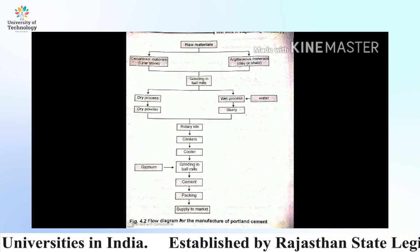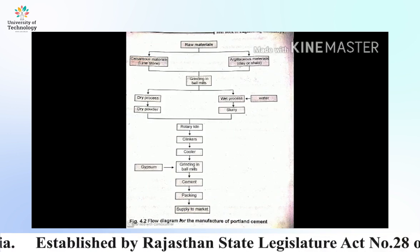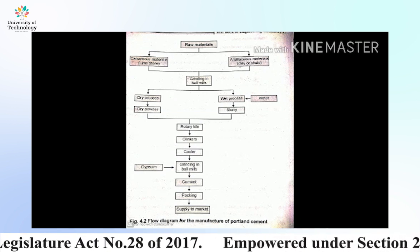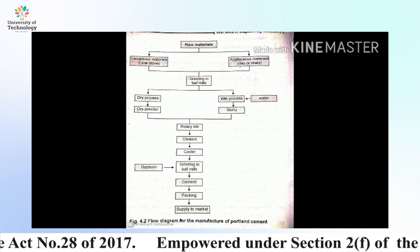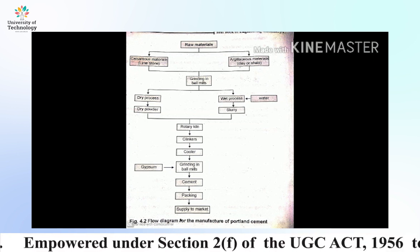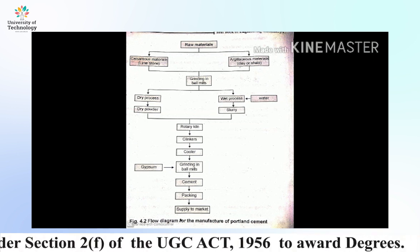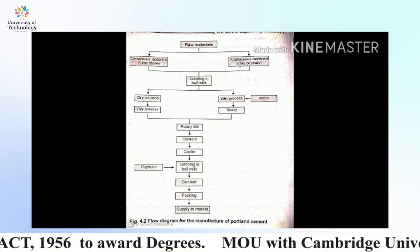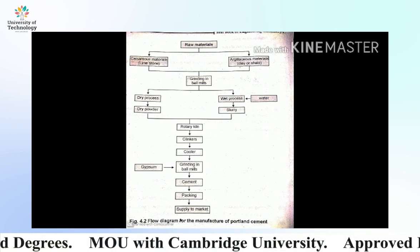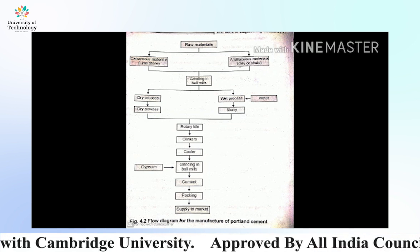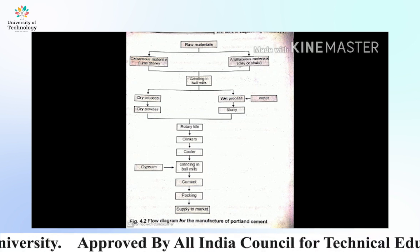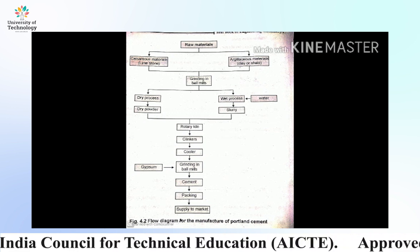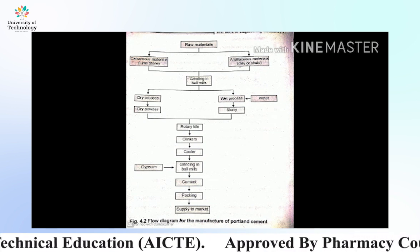Flow chart summary: raw materials — calcareous material (limestone) and argillaceous material (clay and shale) — enter either the dry process as powder or the wet process with water to form a slurry, which then feeds into the rotary kiln.